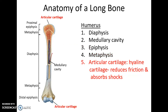At the very ends of bones where they come together to form movable joints, you find articular cartilage, which is hyaline cartilage. This helps reduce friction at moving joints and also absorbs some shock.